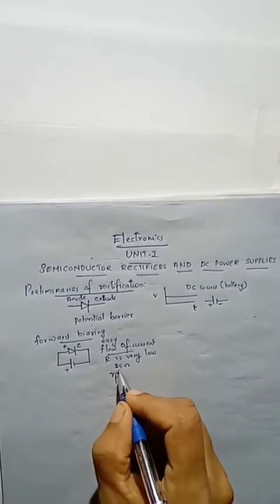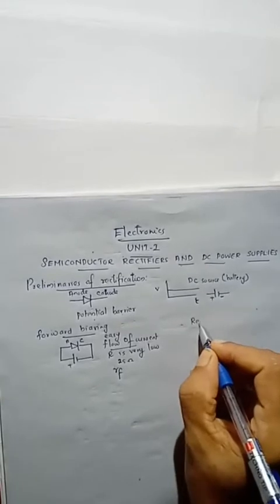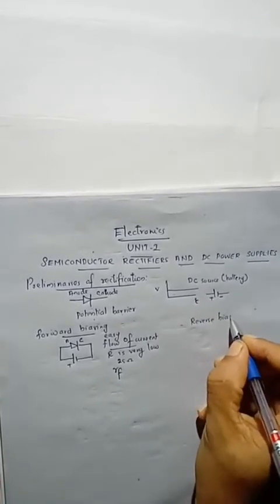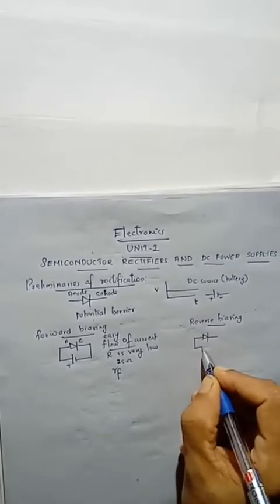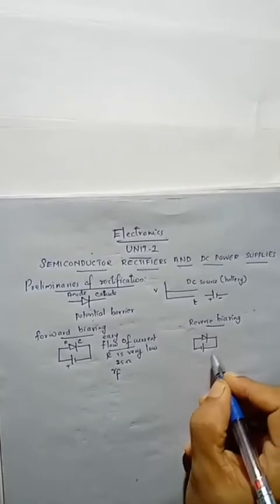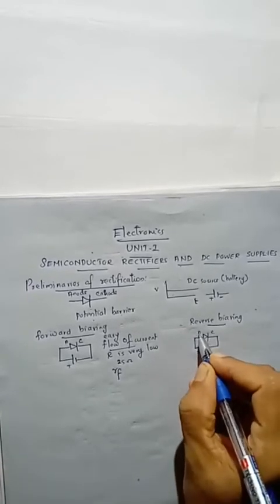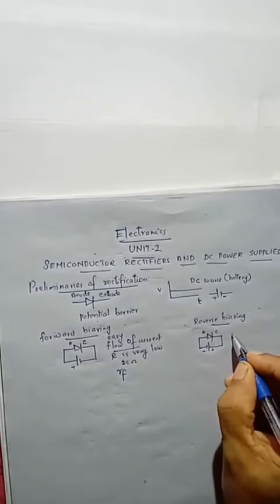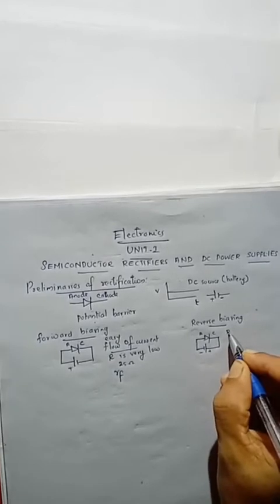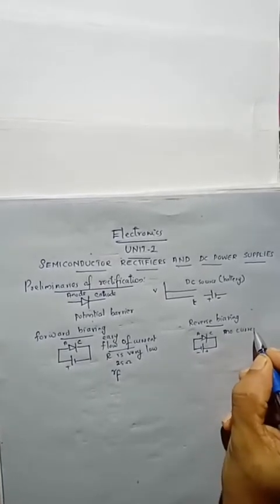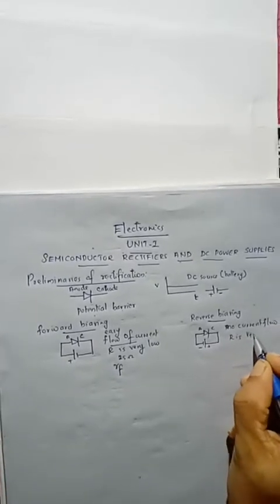In practical cases, we can neglect this value as it is very small. The second case is reverse biasing. In reverse biasing, the negative terminal of the battery is connected to the anode and the positive terminal is connected to the cathode. In this case, the height of the potential barrier increases, and because of that there is practically no current flow through the diode. So in this case, resistance is very high.